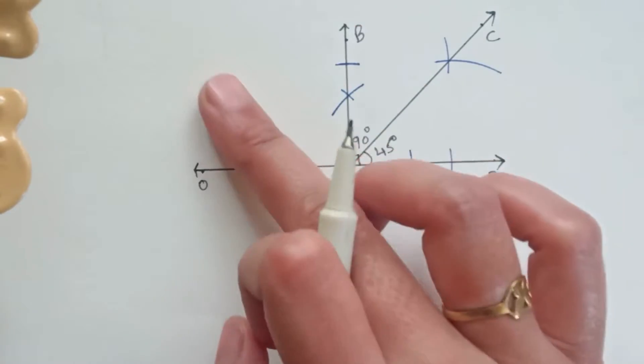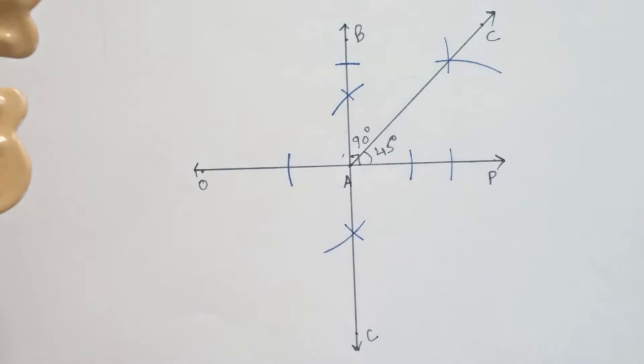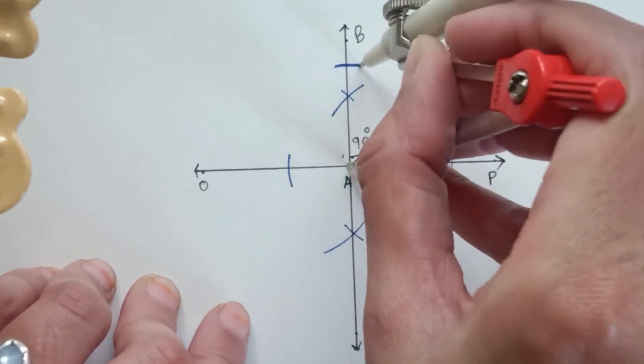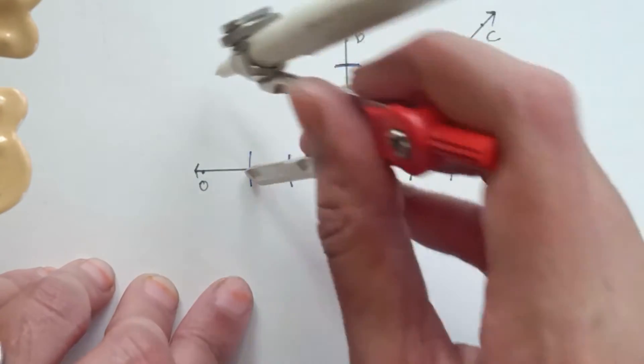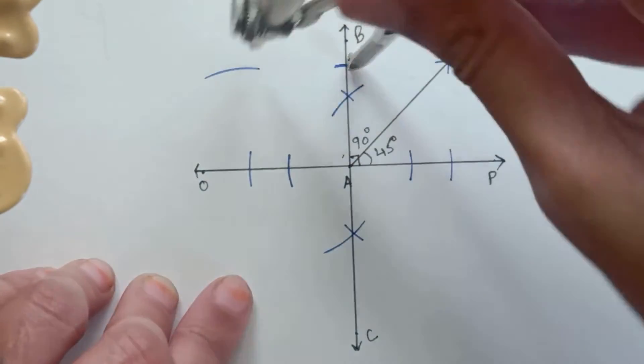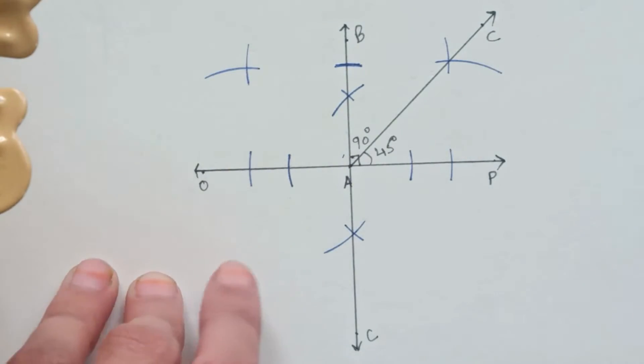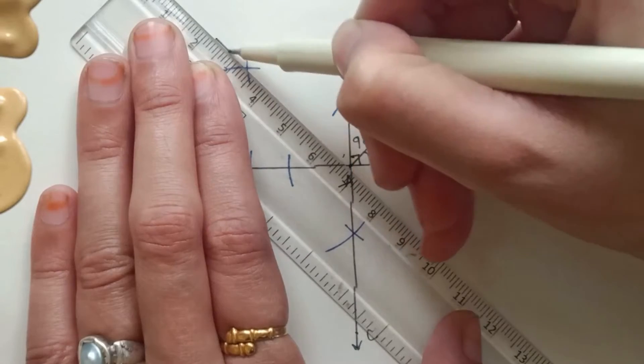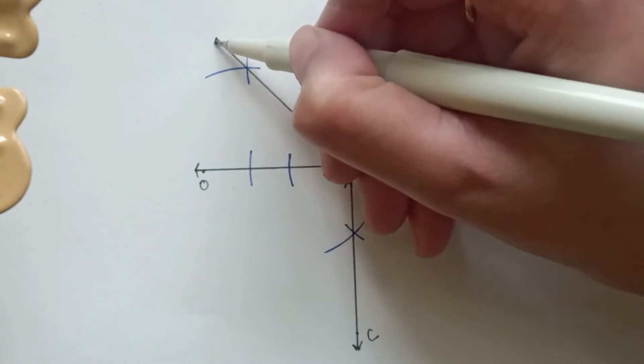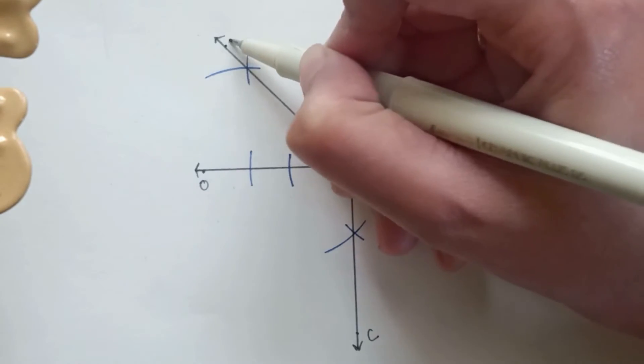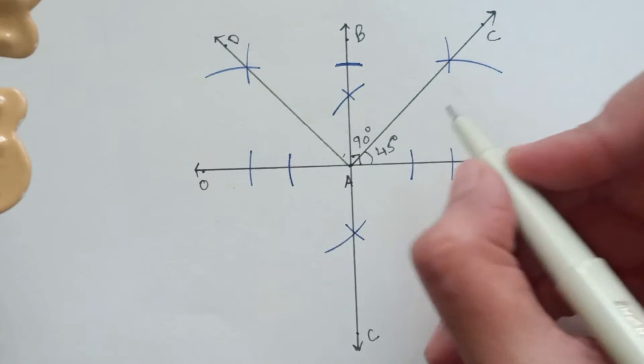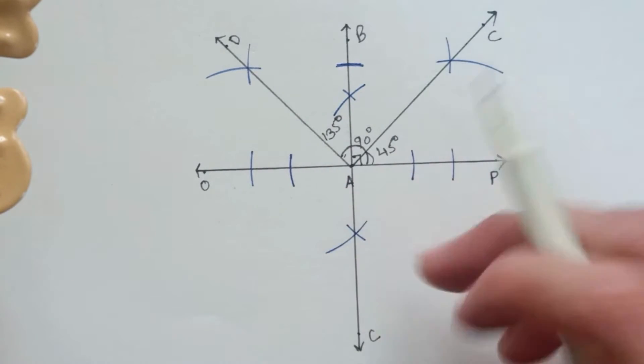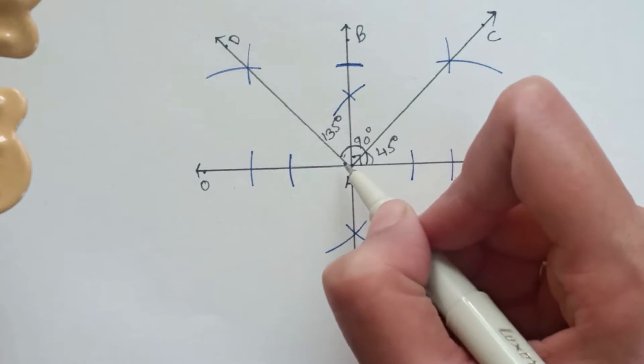Now similarly in between OB we have to perform the same procedure to get the angle of 135 degrees. Put the pointer on A, draw intersecting arcs, then join these two points. We'll name it AD, so this AD line will be 135 degree line and this entire complete semicircle will become 180 degrees.